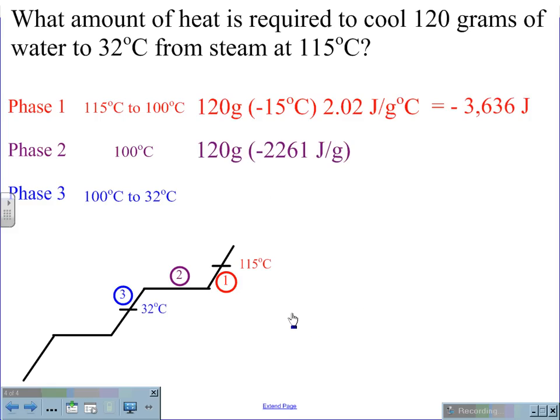120 grams times negative 2,261 joules per gram gives us a value of negative 271,320 joules. In this case, the specific heat capacity is negative because we are going down the temperature scale.